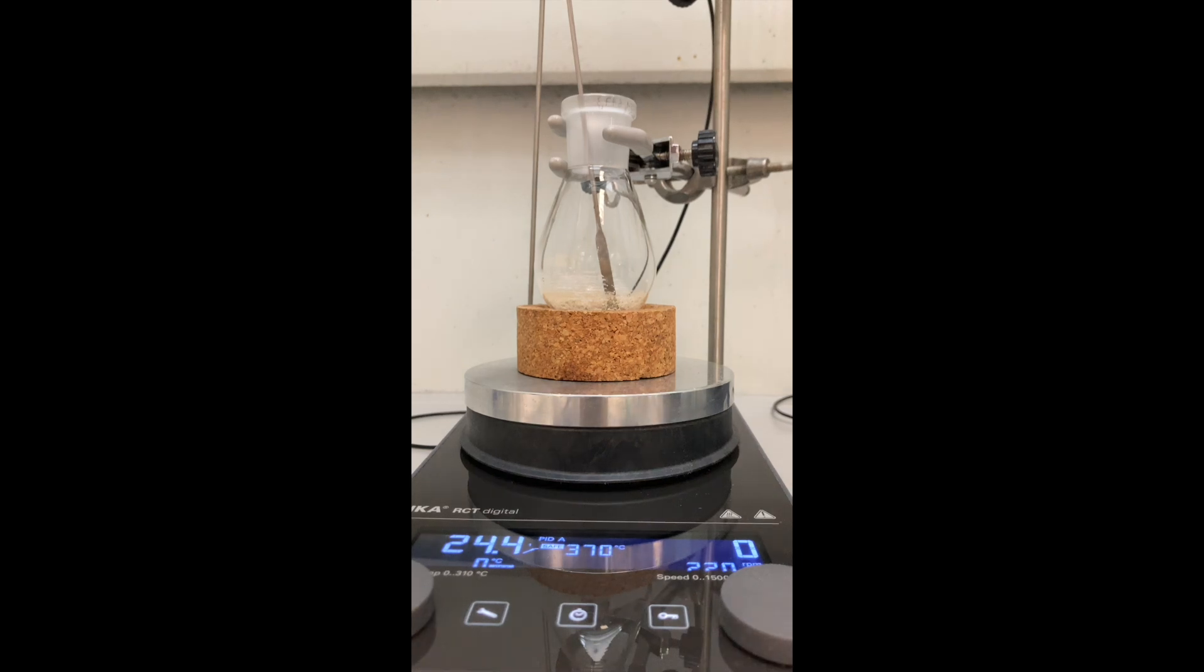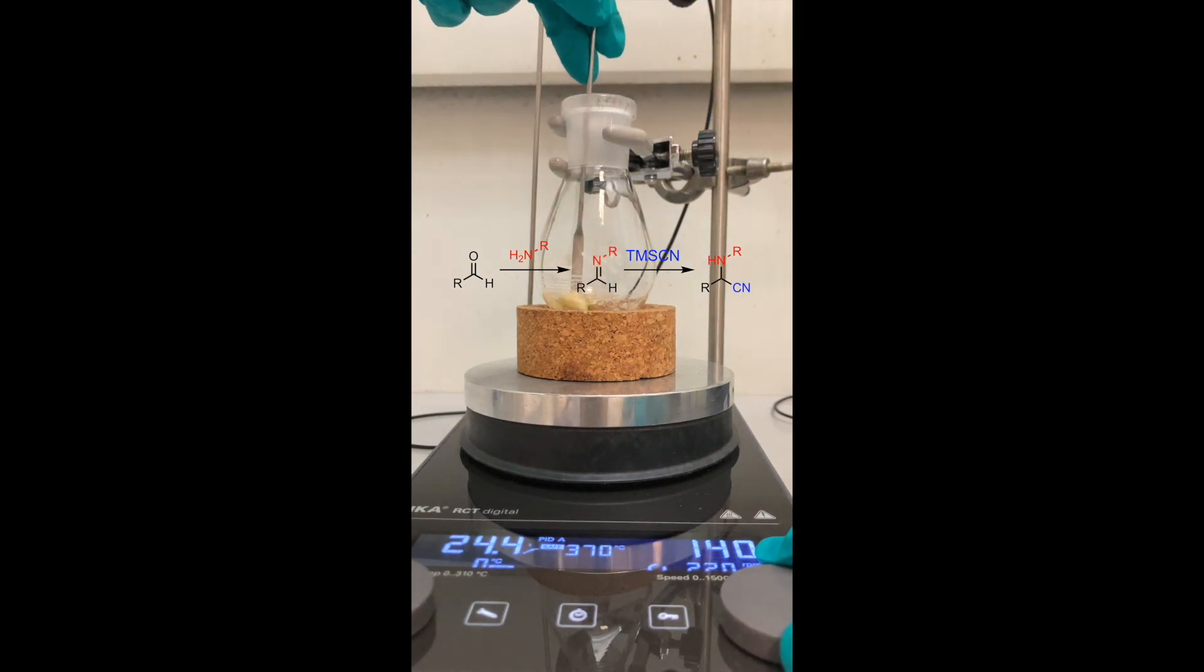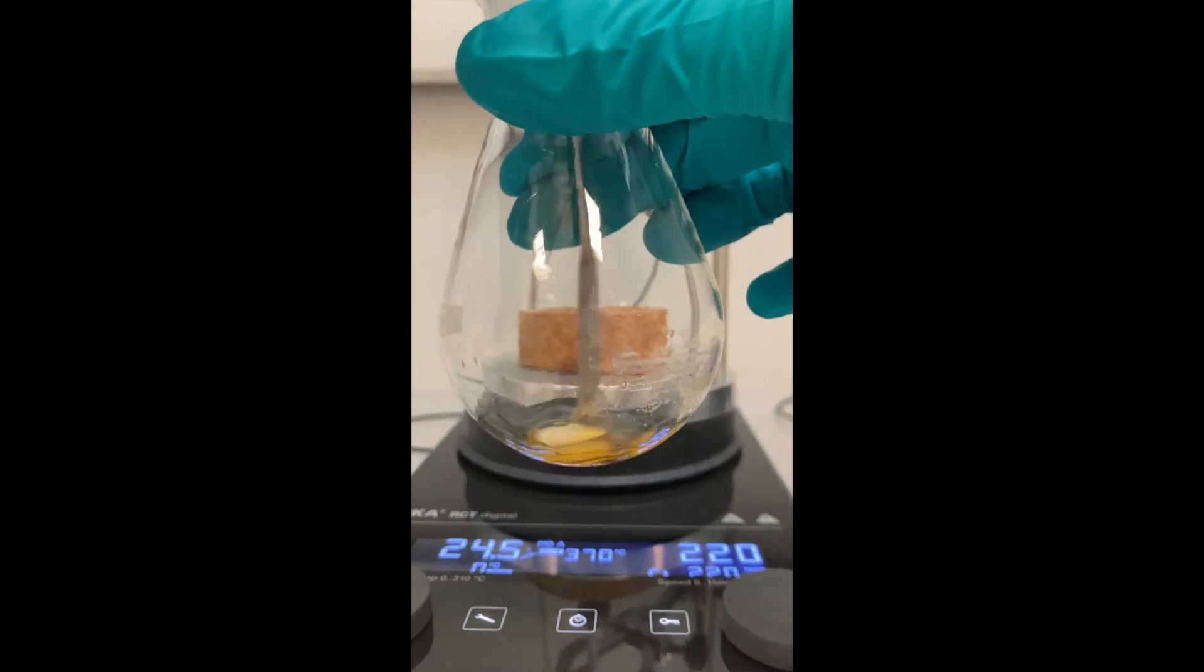I set up a Strecker reaction. The Strecker reaction is the condensation of an aldehyde or a ketone with an amine in the presence of a source of cyanide anions to afford the corresponding alpha-aminonitrile.